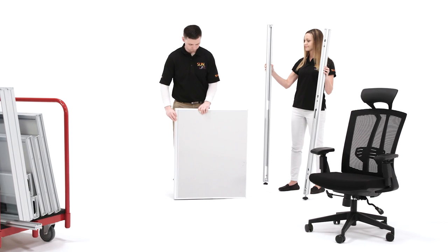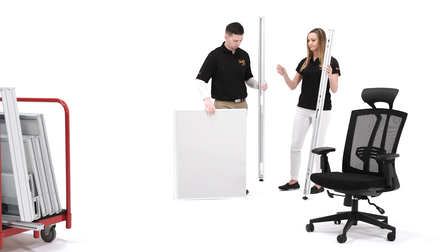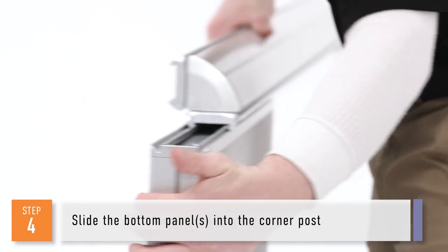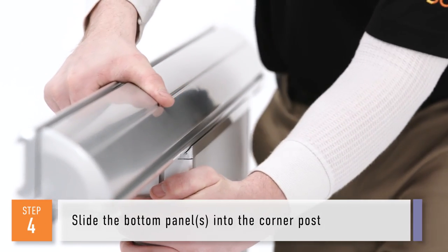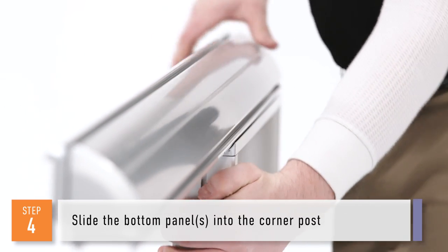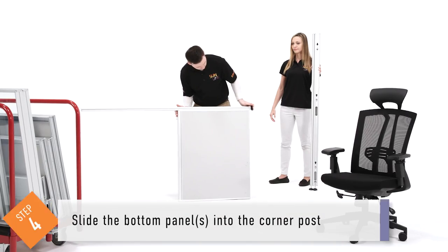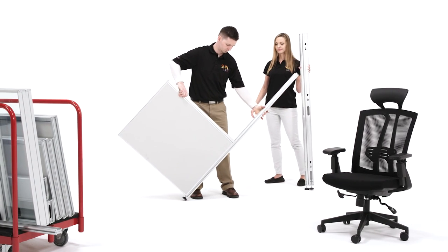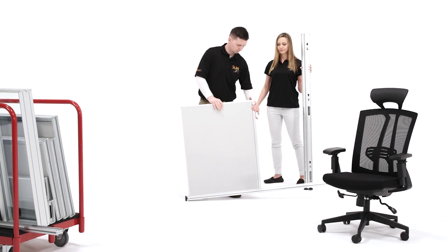The next step is to begin installation by building one corner of one of the cubicles. First, slide the large base panel or raceway end base panel all the way down into the 90-degree L corner post. Note, base panels that go below the work surface line come in different heights, depending on whether that section uses a raceway or not.